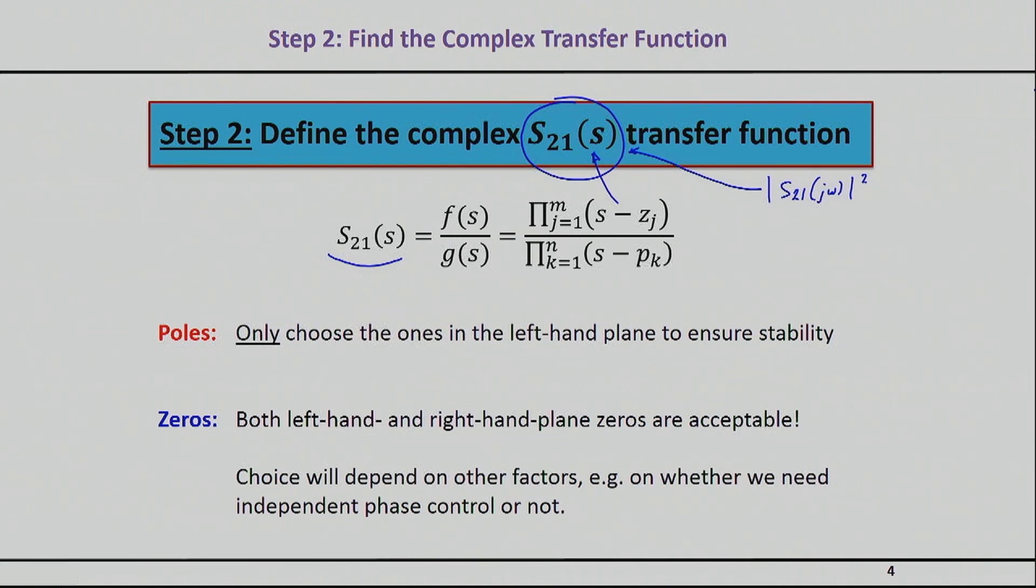The proof is something we're going to skip in this class, but it is basically guaranteed that you will have a polynomial in the numerator and a polynomial in the denominator, and each one of them will have some roots. The roots of the polynomial in the numerator essentially are the ones responsible for making S21 equal to zero and they're basically called zeros. The roots in the denominator are the ones for making S21 being infinity and they're basically called poles.